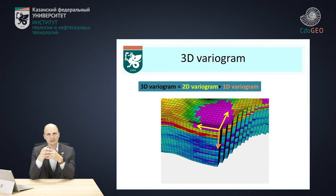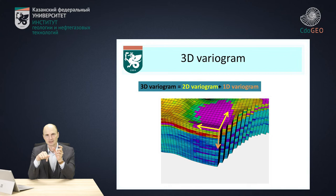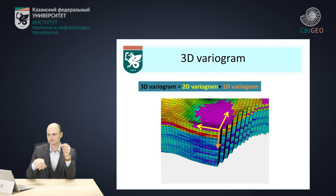It's really logical, because the size of our cell is usually 50 by 50 meters in the x and y directions, and it's only one meter in the z direction — the vertical direction. And for sure, the variability along the x and y directions is much, much smaller than along the vertical direction.